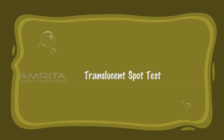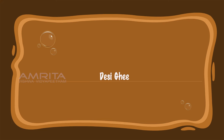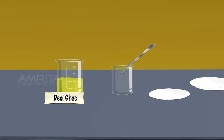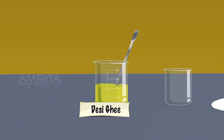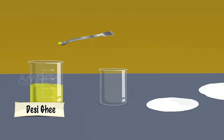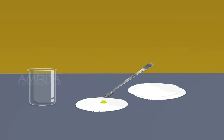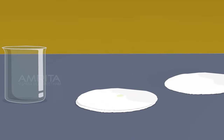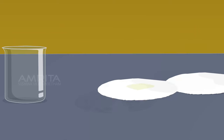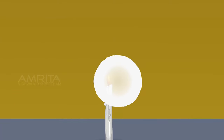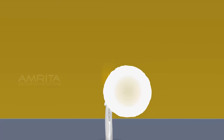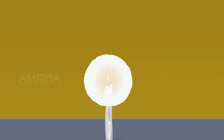Translucent Spot Test. Desi Ghee. Take a small amount of desi ghee using a spatula and put it on a filter paper. Then press the substance on the filter paper using another filter paper. A translucent spot appears on the filter paper. The reason is that when fat or oil is placed on a sheet of paper, it diffracts light. The diffracted light can pass from one side of the paper to the other.